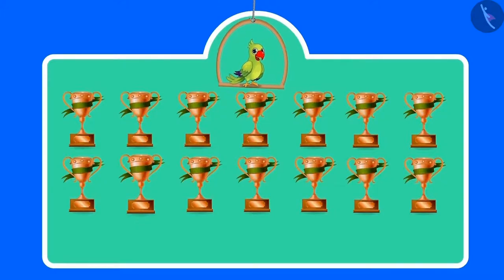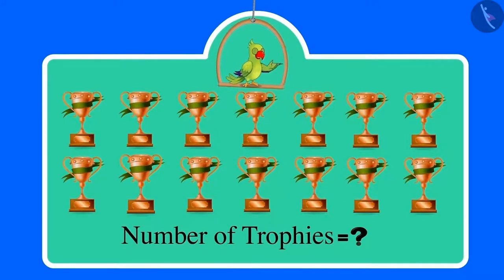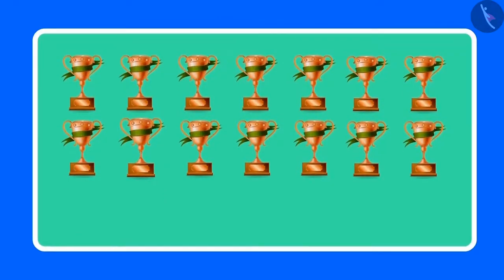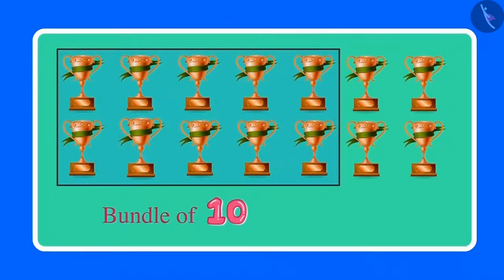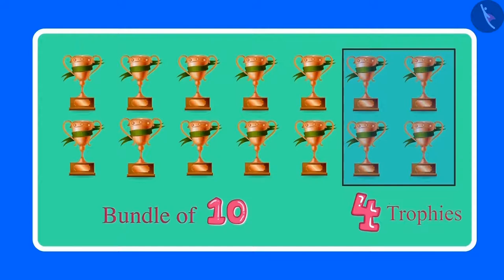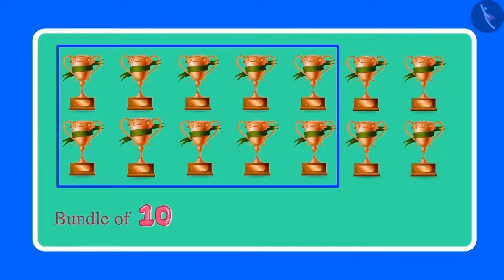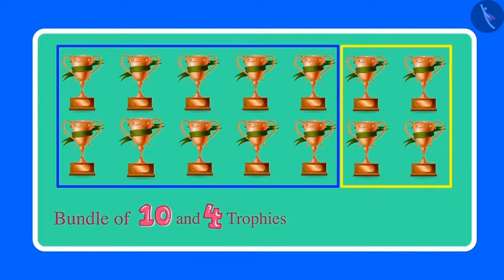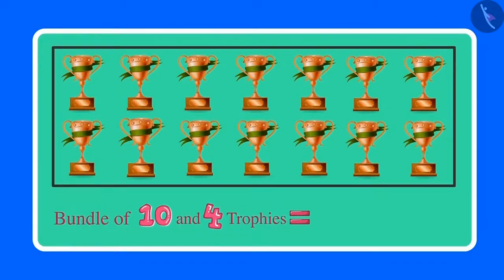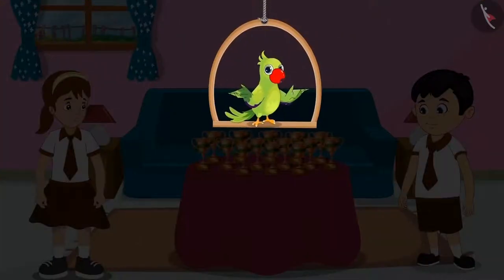Can you tell how many trophies Chotu has? Let's count together. These are 10 trophies, and we can make one bundle of 10 trophies. Apart from this, there are four more trophies. This means Chotu has one bundle of 10 and four more trophies — that is 14 trophies in total.